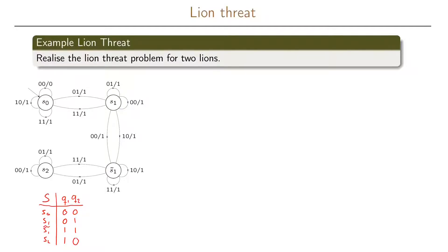To simplify things, we take the state assignment and put it into the state transition graph. So the first state is represented as 00, the next as 01, then 11, and the last state is represented by 10. Now we are ready to make the truth table for this problem.